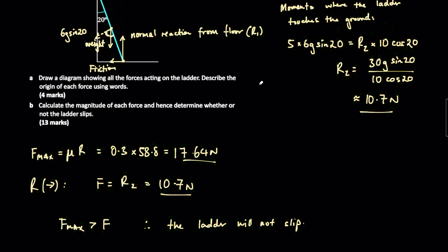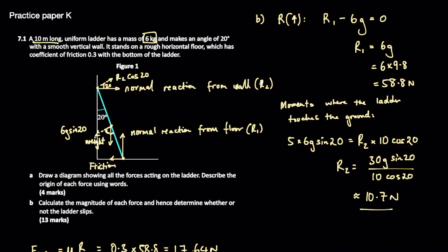F max is larger than F, the friction in this situation, and therefore the ladder will not slip. Let's talk about the marks you can pick up here even if you're not completely confident. If you're given a statics question with a rigid body — that's what we call these ladders or rods — you're likely going to be resolving things vertically or horizontally. Think about the forces acting and see if you can create an equation. Just by trying to resolve vertically or horizontally, even stating that gets you one or two marks, and creating an accurate equation is another mark.